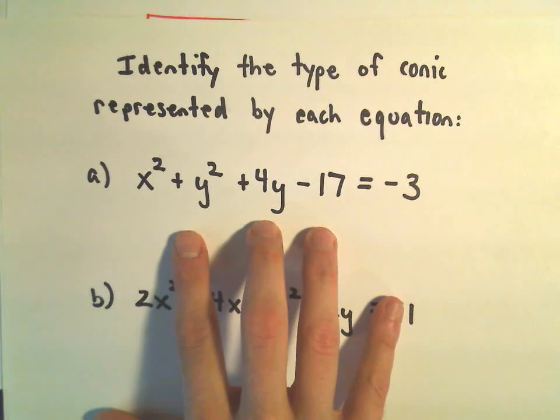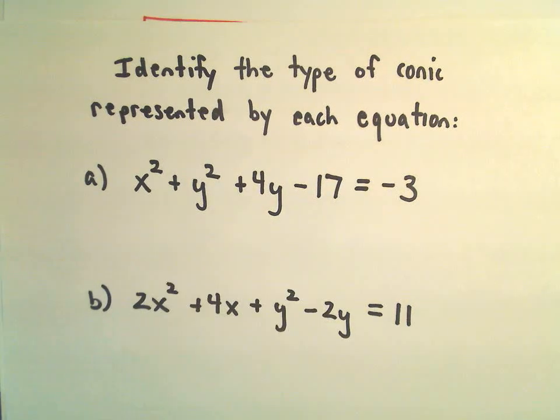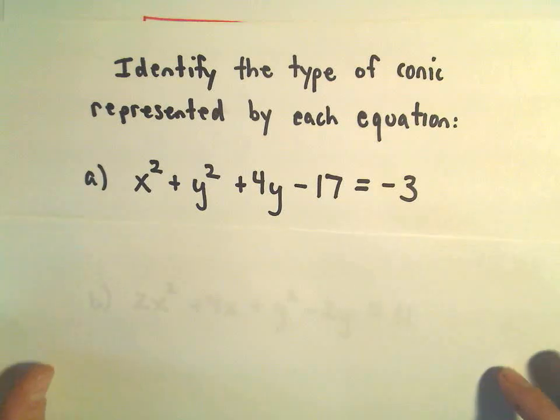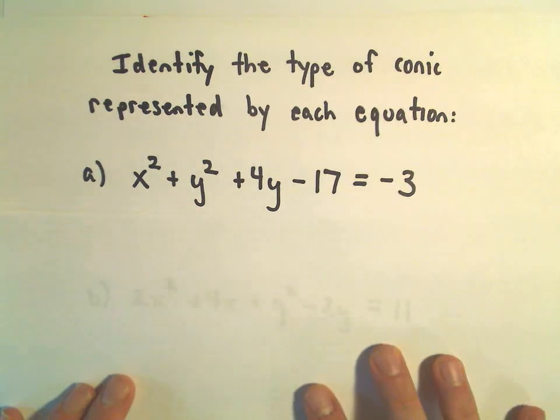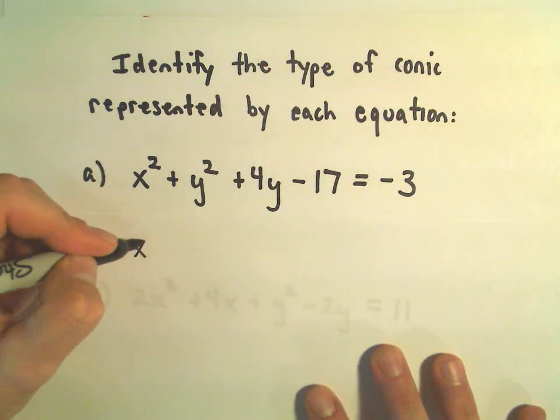So here we have x squared plus y squared plus 4y minus 17 equals negative 3. I think with some practice you'll be able, once you do a few of these I think you can do a little less work to recognize them, but what I'm going to do is I'm going to do completing the square.